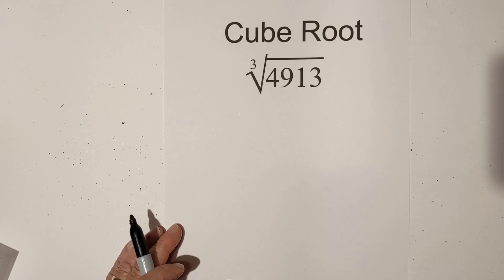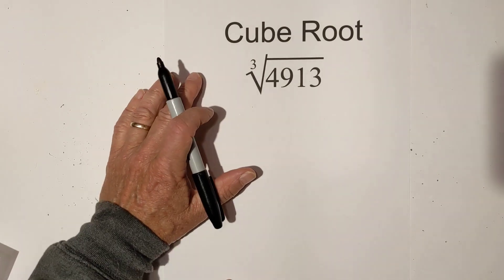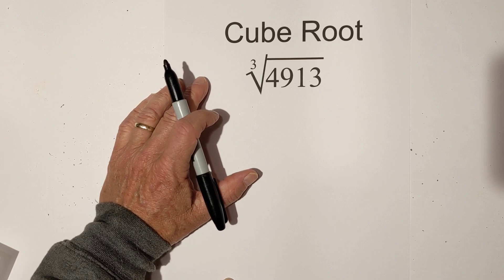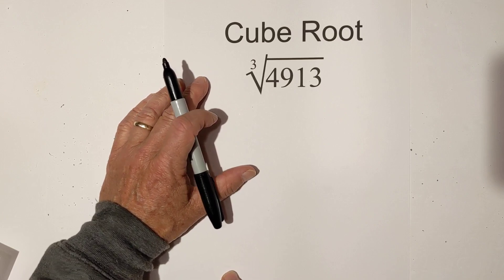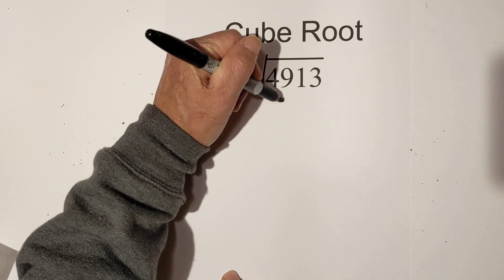Welcome to Moo Moo Math and Science. In this video I will show you how to find the cube root of 4913 using a factor tree. So let's get started.